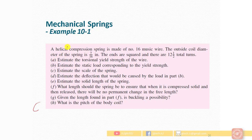Last time we discussed spring deflection and stresses. Now we are going to discuss a numerical problem related to deflection and stresses in a spring. The helical compression spring is made of number 16 musical wire. The outside coil diameter of the spring is 7/16 inches. The material is number 16 musical wire.